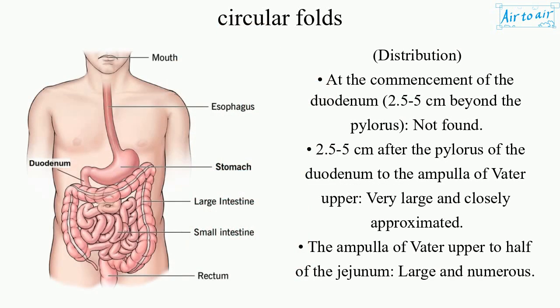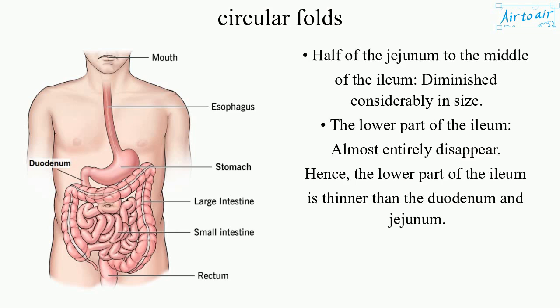Distribution: At the commencement of the duodenum, 2.5–5 cm beyond the pylorus, circular folds are not found. From 2.5–5 cm after the pylorus to the ampulla of Vater, they are very large and closely approximated. From the ampulla of Vater to half of the jejunum, they are large and numerous. From half of the jejunum to the middle of the ileum, they diminish considerably in size.